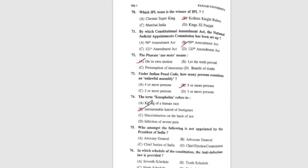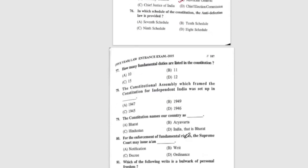Question 75: Who amongst the following is not appointed by the President of India? The correct answer is B, Advocate General. Question 76: In which schedule of the Constitution is the anti-defection law provided? The correct answer is option B, the 10th schedule. Question 77: The correct answer is B, 11th. Question 78: The Constitutional Assembly which framed the Constitution for Independent India was set up in 1946, option D. Question 79: The Constitution names our country as India, i.e., Bharat — option D, Article 1 of our Constitution.